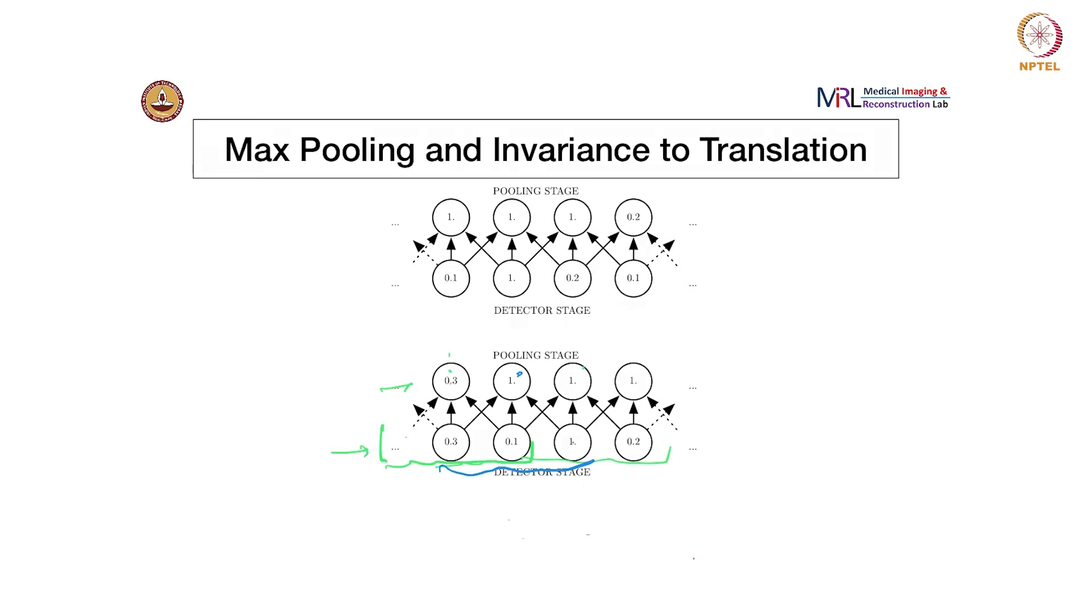Similarly, if you consider this unit, this takes its input from a combination of different units. Here, these three, so the maximum again is one. Similarly, for the last one here, consider three; there is one here which is not shown. Once again, the maximum is one, assuming that the one that is not shown is smaller than one.